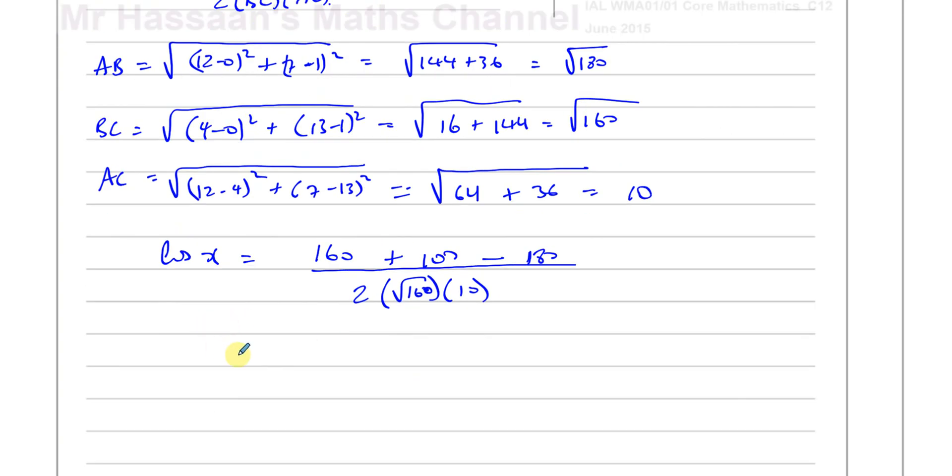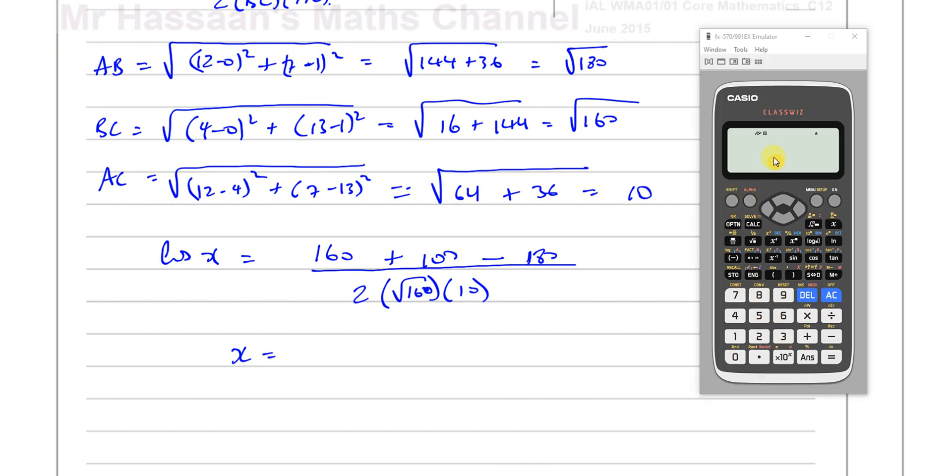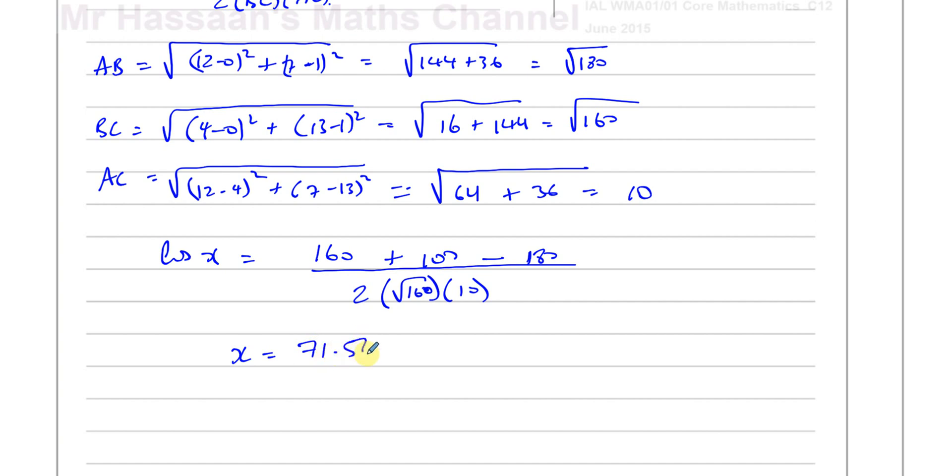So we can just stick this all in our calculator, inverse cosine of all of that, and we get our answer. So we're going to have, make sure we're in degree mode, which we are, because it says in degrees. So I'll put inverse of cosine, put my fraction, so it's 160 plus 100 minus 180, all over, that's going to be 20 times root 160, and close that bracket, press equals, and we get 71.565, 71.565 degrees.